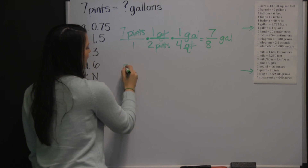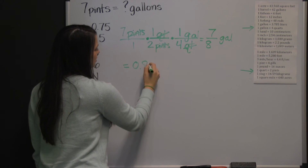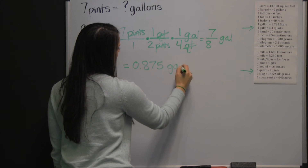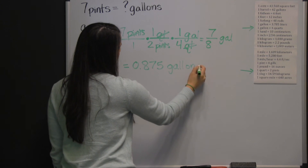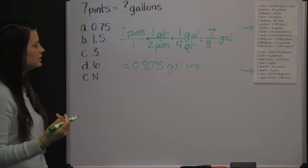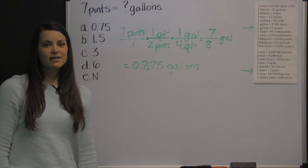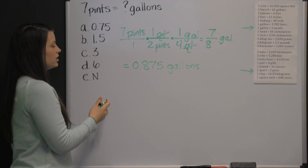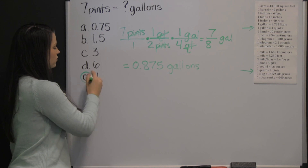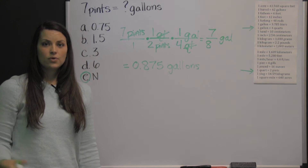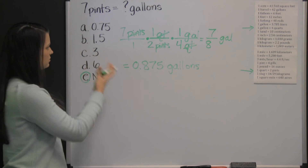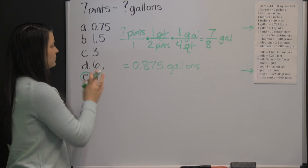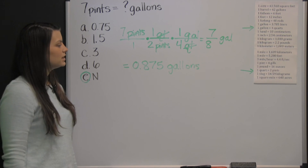If you divide that, seven-eighths is 0.875 gallons. So seven pints is 0.875 gallons, which is not pictured among the answer choices, so we would have to circle E — none of these answers are correct, so we have to choose E for that.